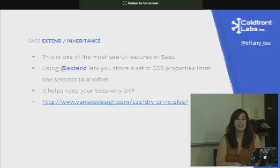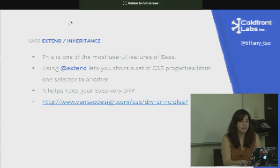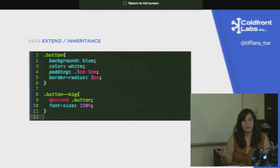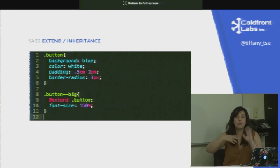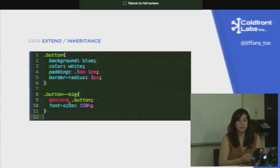The last syntax concept is `@extend`, which lets you extend a shared set of CSS properties from one selector to another. If you have an existing CSS selector defined — like a class name — and you want all of those properties somewhere else in your Sass file, you can use `@extend`. It helps keep your Sass DRY. For example, if you've defined a `.button` class, you can extend it into another selector just by writing `@extend .button`.